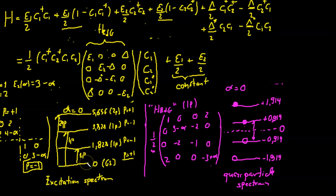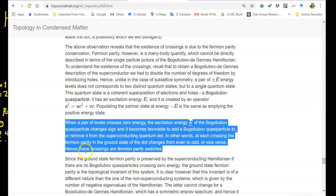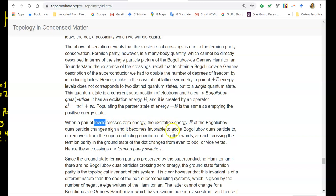So that's a fermion parity switch in the sense that from then on, the order of the ground state and first excited state stops from being something like with a parity plus one to a parity minus one to being from a parity minus one to a parity plus one. So that explains why they say when a pair of single particle levels crosses zero energy, the excitation energy of the Bogoliubov quasiparticle changes sign. And it becomes favorable to add a Bogoliubov quasiparticle or remove it from the superconducting system, essentially that.